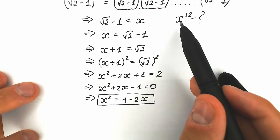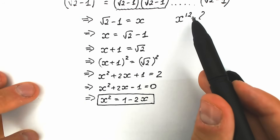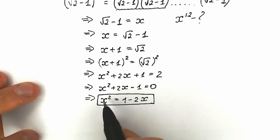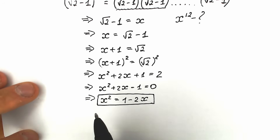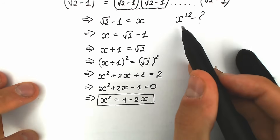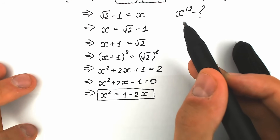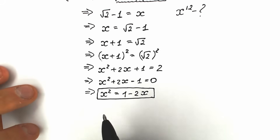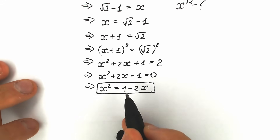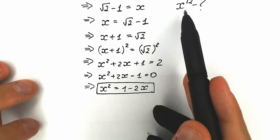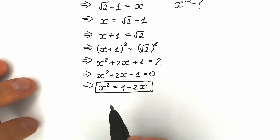We need to find x to the 12th power, and we now know about x to the second power. If we raise that expression to the second power, we get x to the fourth power. Next, we get x to the eighth power. We need to get closer and closer to x to the 12th power. So if we raise both sides to the second power, we'll have x to the fourth power, which gets us closer to x to the 12th. Let's do this.